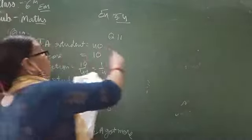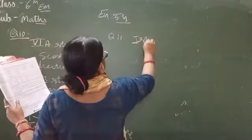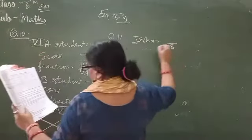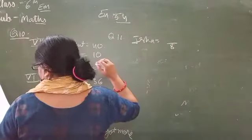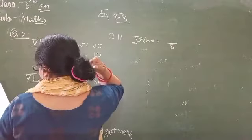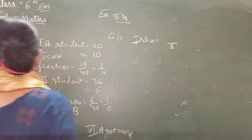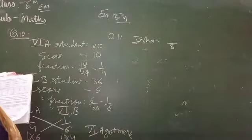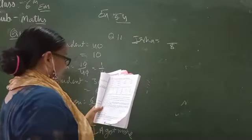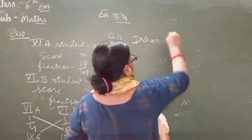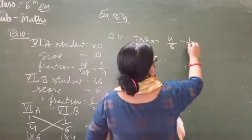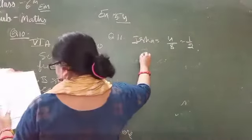So Isha's packet has 8 biscuits, and she ate 4. So the fraction is 4 upon 8. Next, Priti.